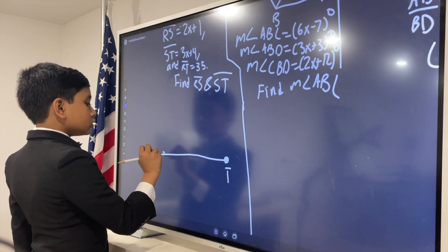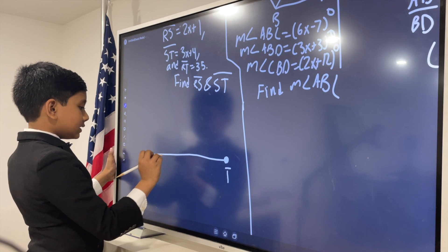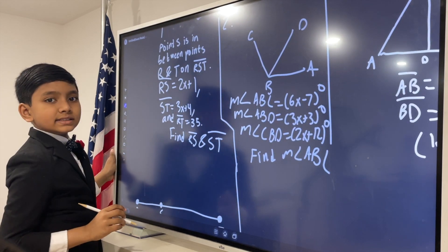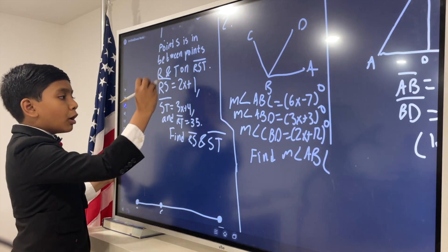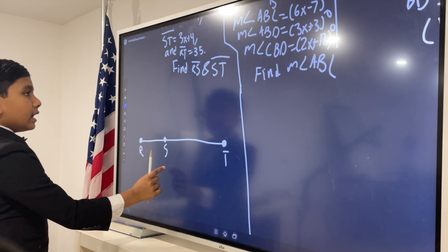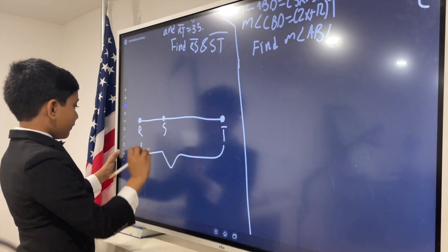And it's closer to R than it is to T. Because we know RS, the distance from R to S, is smaller than ST, the distance from S to T. And we know that this entire thing is 35.